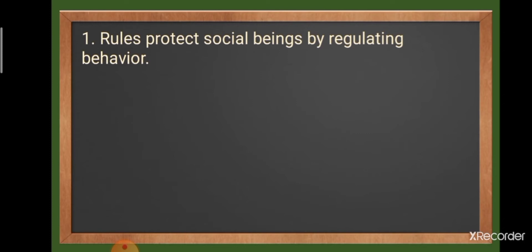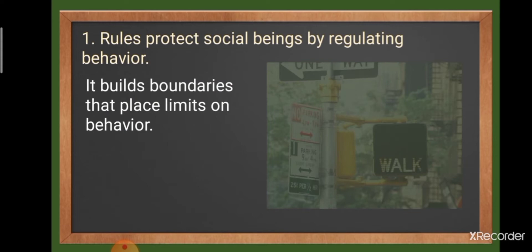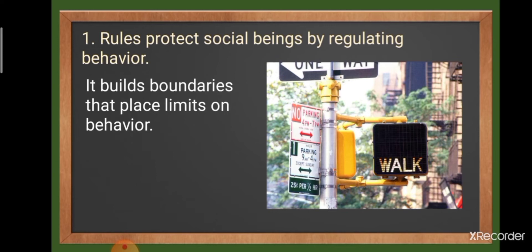Rules protect social beings by regulating behavior. It builds boundaries that place limits on behavior. Take, for instance, this photo — imagine roads without traffic lights and signs that would guide how we should behave. It would be very chaotic. Rules are coupled with means to impose consequences on those who violate them and to give benefits to those who adhere to them. People follow these established rules to avoid negative consequences and to reap positive outcomes. Because of the rules of traffic, it is easier for us to travel from one place to another.